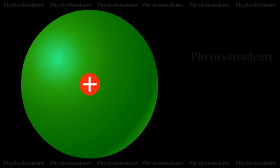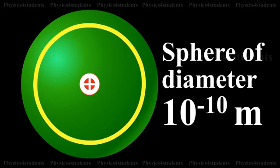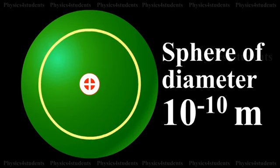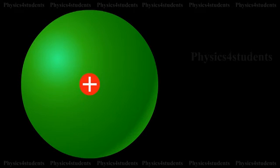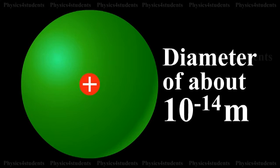Atom may be regarded as a sphere of the diameter 10^-10 meters, but all of the positive charge and almost the entire mass of the atom is concentrated in a small central core called nucleus, having a diameter of about 10^-14 meter as shown in the diagram.